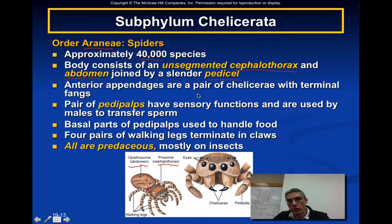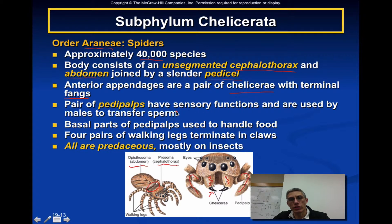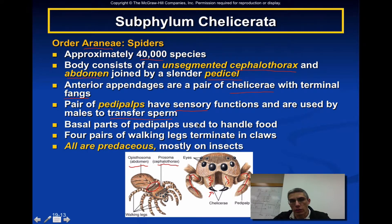The anterior appendages are going to be a pair of chelicerae with terminal fangs — meaning the fangs are located at the end. You can see the chelicerae and the very large fangs in this representation of a spider. The pair of pedipalps are going to be used as either a sensory organ or, in males, to transfer sperm to the female during reproduction. The basal parts of these pedipalps are also used to handle food.